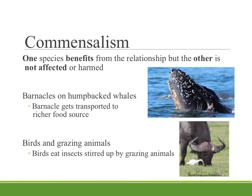The second category of symbiosis is commensalism, where one species benefits but the other is not particularly affected or harmed — it may not even notice it is in a relationship. For example, many whales carry barnacles on their back. A barnacle is a small sea creature that builds a solid shell around itself and is a filter feeder. By living on the whale, it gets transported to various food sources richer than if it stayed in one spot, while the whale is not particularly affected.